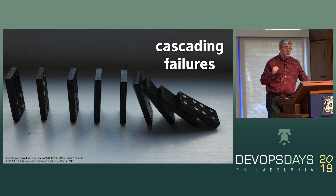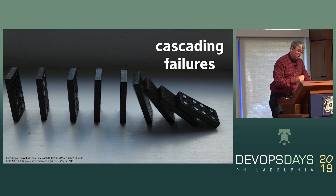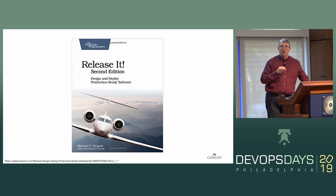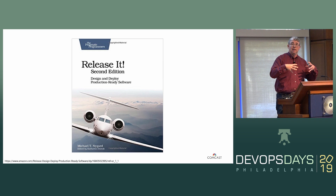There are actually great resources for this. One of my favorites is a book called Release It by Michael Nygaard — the second edition was recently released. I highly recommend this book. It has a bunch of what he describes as stability patterns: patterns you can apply to your systems to help prevent some of these cascading failures. The big idea is to try to contain a failure and keep it in one area.